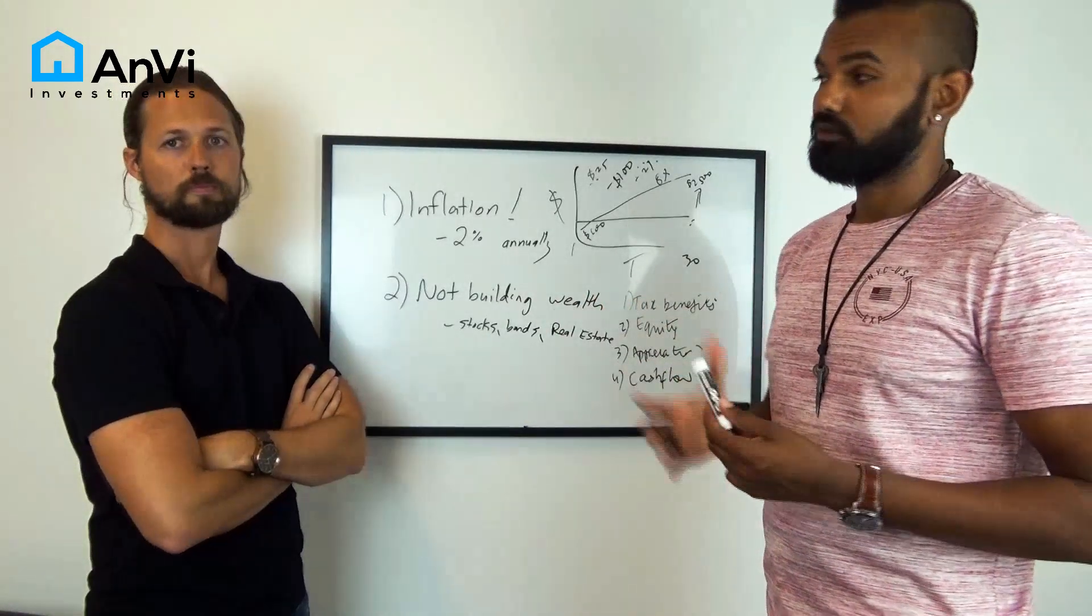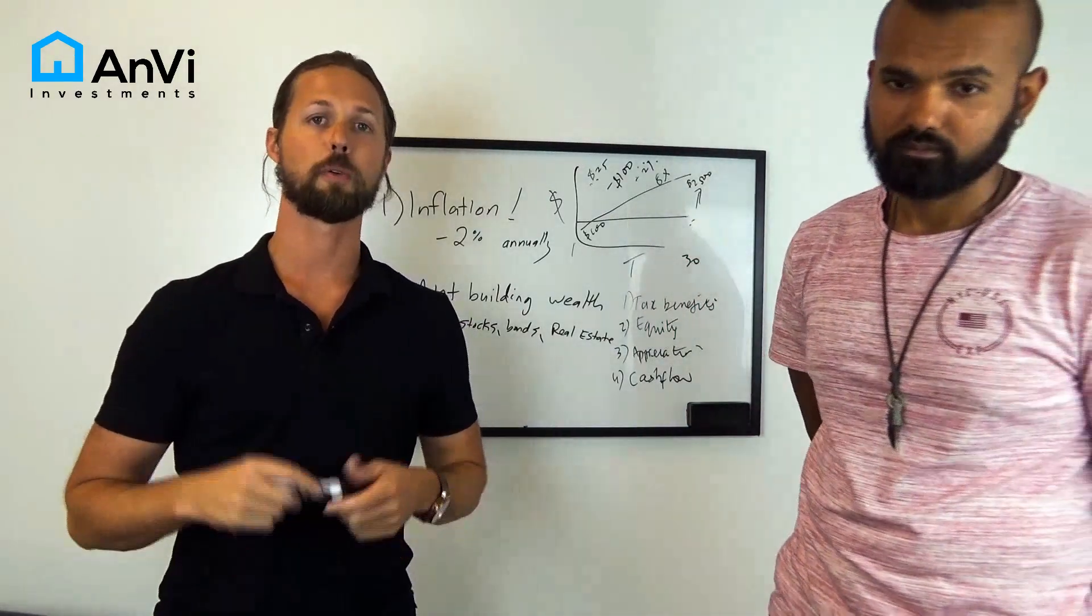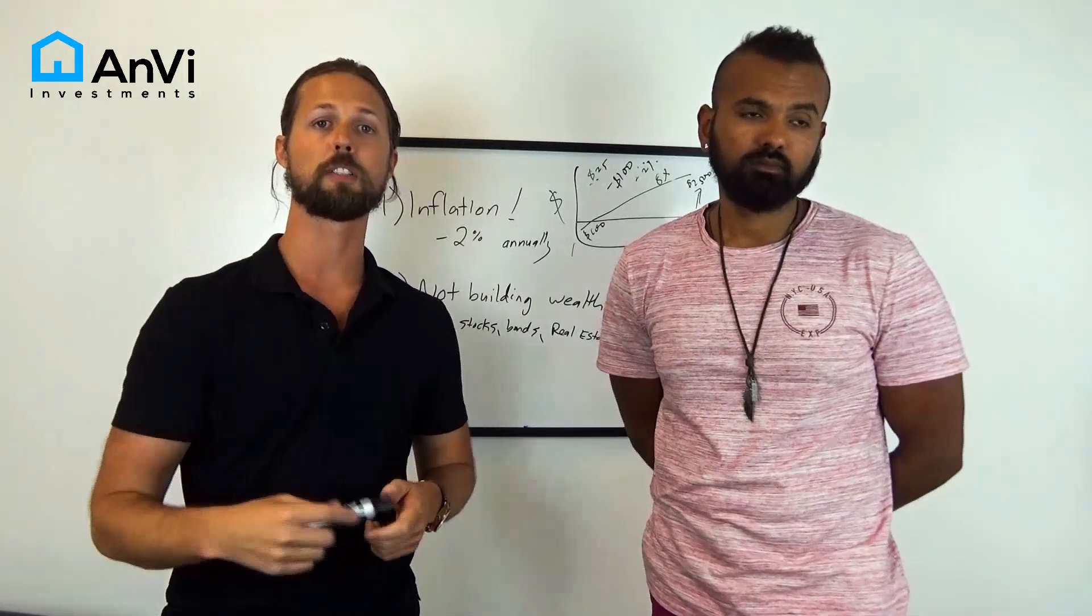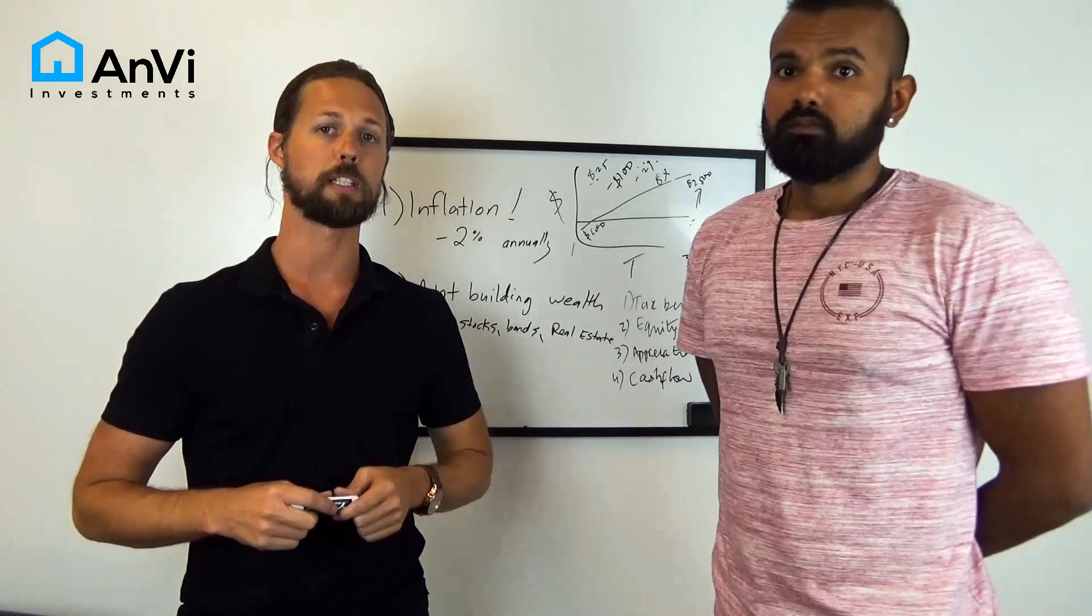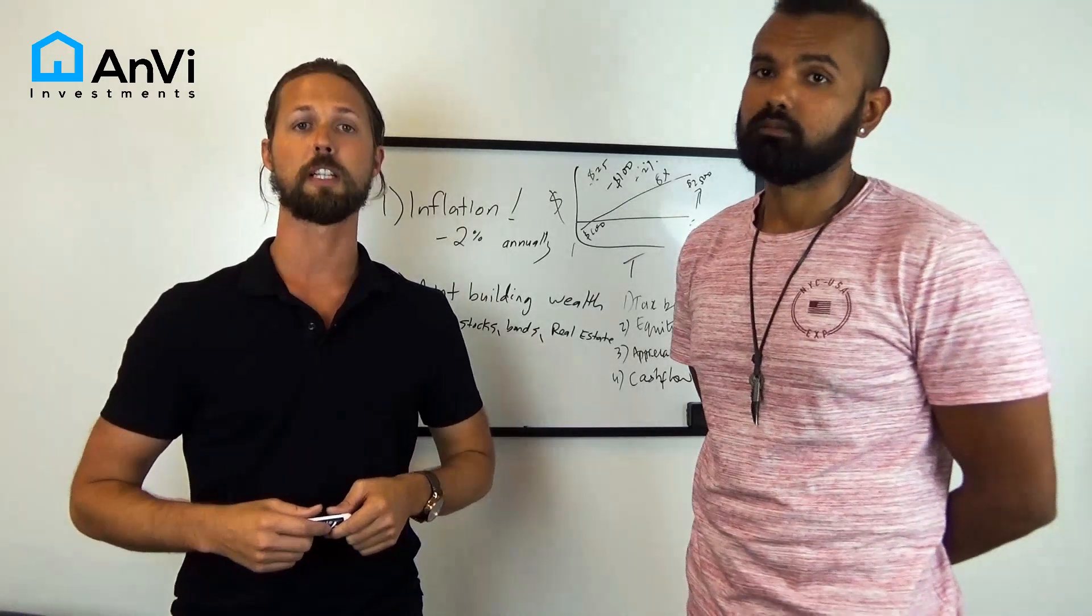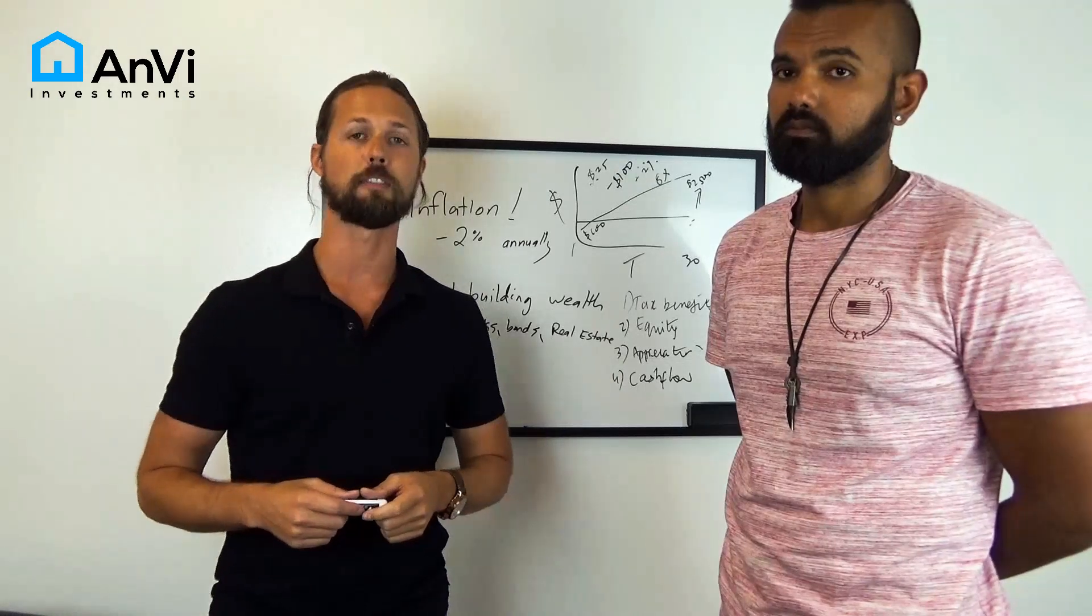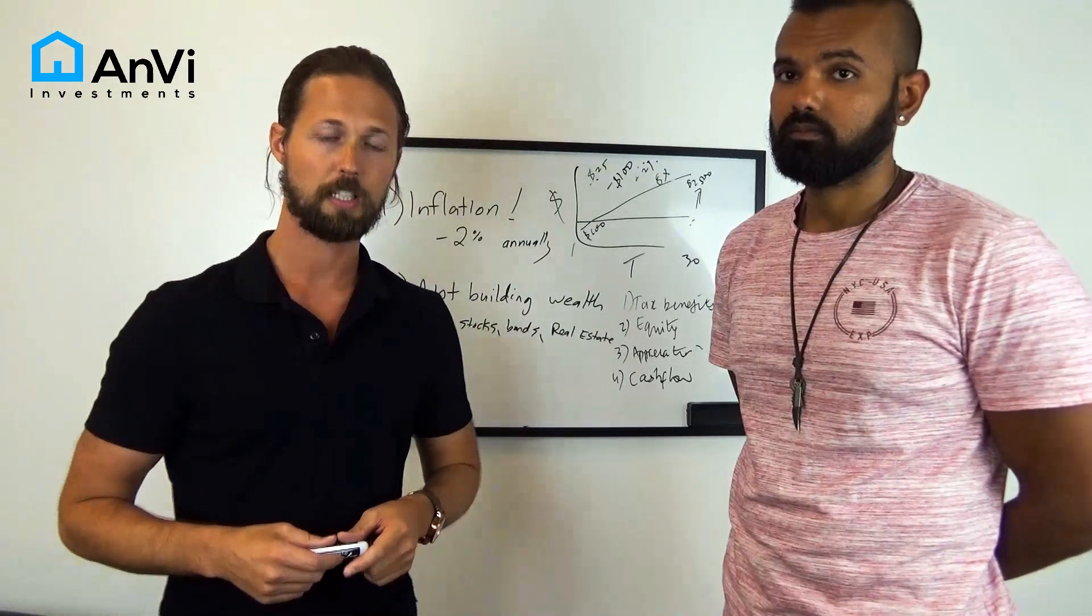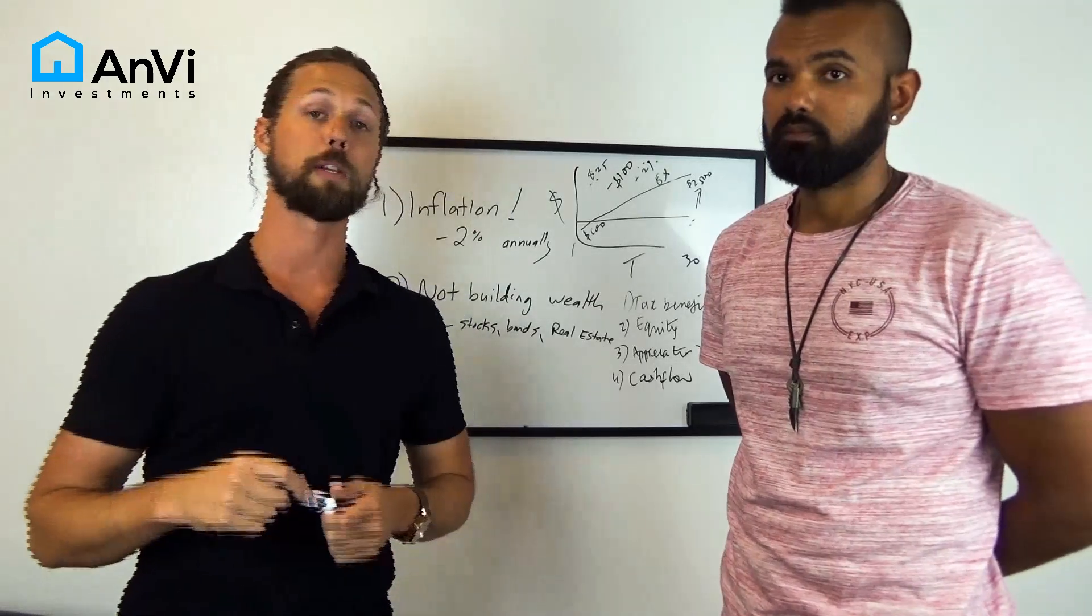To wrap up: basically, either you can swim against the current or with the current. Going against the current is hiding your money in a mattress while it loses money every single second of the day. Or you go with the current and play the game as it is already set up, with the Fed maintaining inflation rate of around 2%, and you can actually now leverage that and enjoy and ride the wave of inflation.